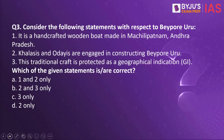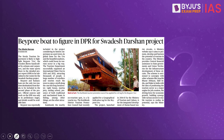Moving on to question number 3. Consider the following statements with respect to Beypore Uru: No. 1 - It is a handcrafted wooden boat made in Machilipatnam in Andhra Pradesh; No. 2 - Khalasis and Odais are engaged in constructing Beypore Uru; No. 3 - This traditional craft is protected as a geographical indication. Which of the given statements is or are correct? This article in The Hindu newspaper today talks about the Beypore boat or Beypore Uru.